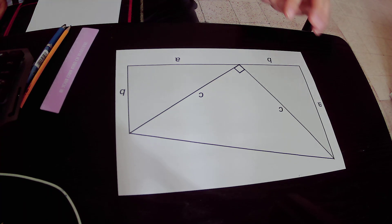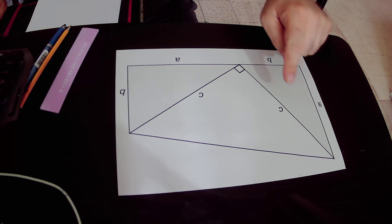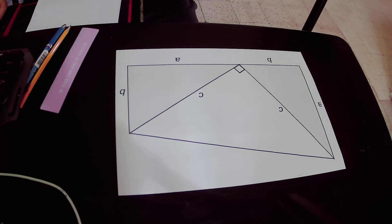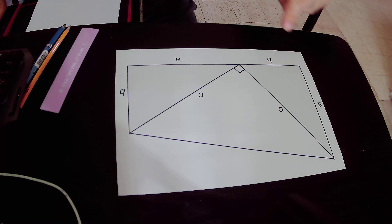In mathematical notation, c squared equals a squared plus b squared. The theorem says that the square of the hypotenuse equals the sum of the squares of the perpendiculars: c squared equals a squared plus b squared.